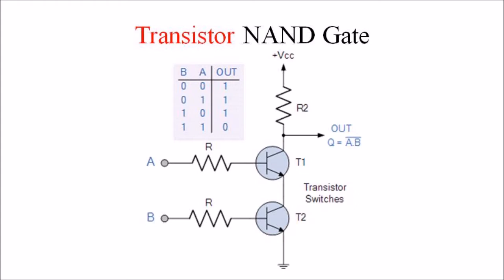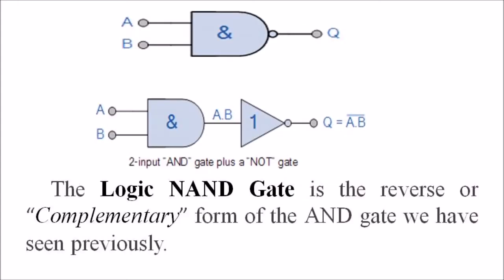The logic NAND gate is available using digital circuits to produce the desired logical function. It is given a symbol whose shape is that of a standard AND gate with a circle, sometimes called an inversion bubble, at its output to represent the NOT gate symbol.